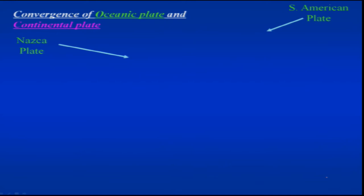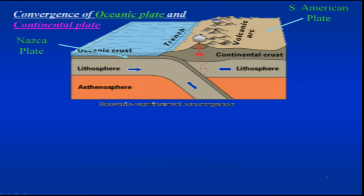Moving to the convergence of oceanic and continental plates, the best and most common example is the Nazca plate and the South American plate. We see volcanic eruptions on the overriding plate. When a plate is subducting down, we have melting of rocks, forming magma that rises to the surface through volcanic cones.